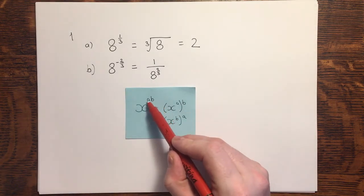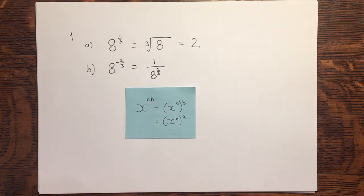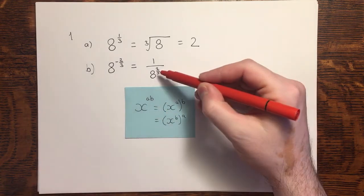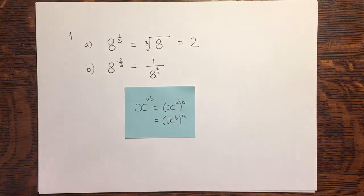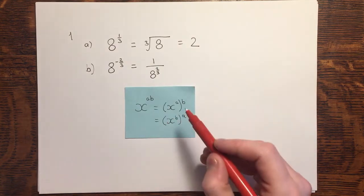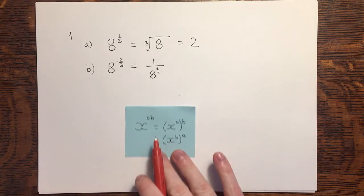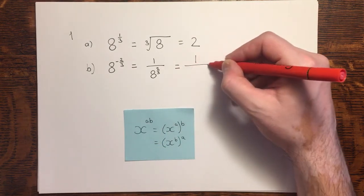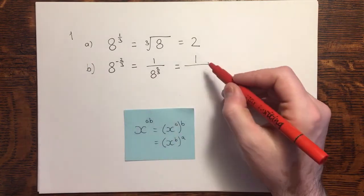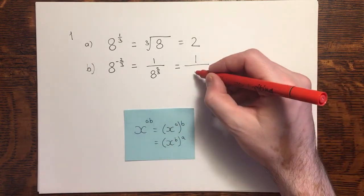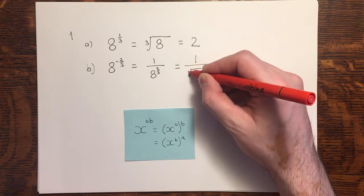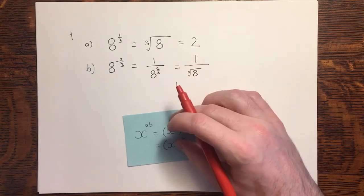When we have two factors giving us the index, two things times together, such as in this case 1 third times by 2 is equal to 2 thirds, we can apply each of these separately. Keeping it on the denominator of our fraction I'm now going to apply the cube root. That's from the third part of this.